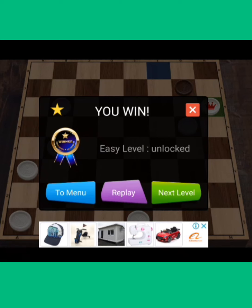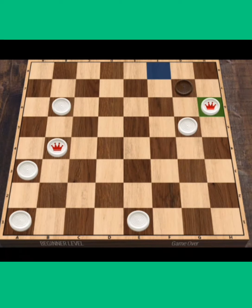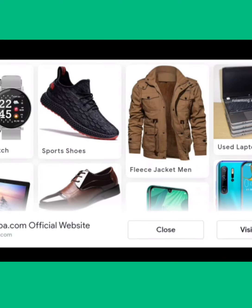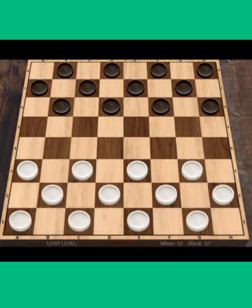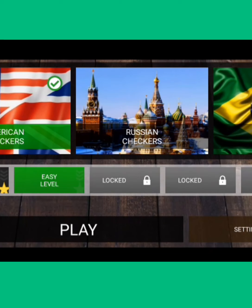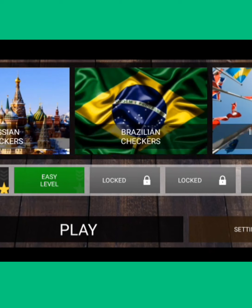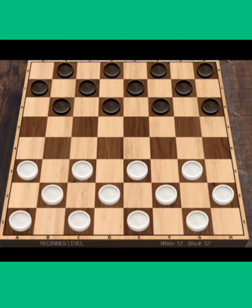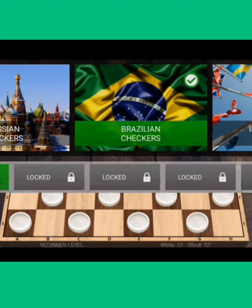You can proceed to the next level if you want, or you can take a new game. Sometimes the ad will appear. You can click that off. You go to the main menu. It shows you Russian checkers. Brazilian. Brazilian is like this.